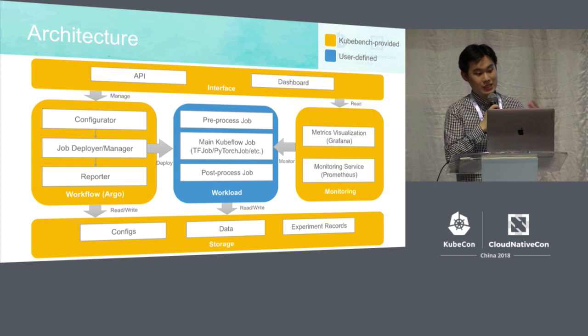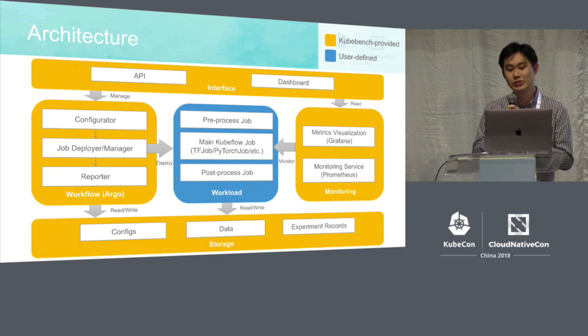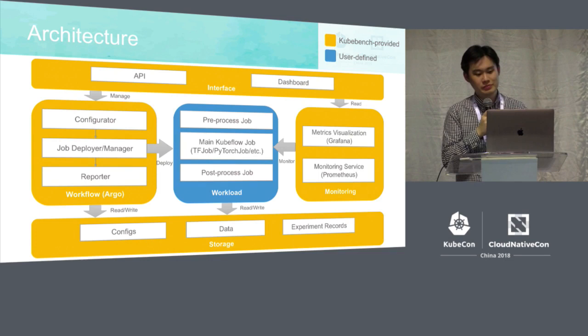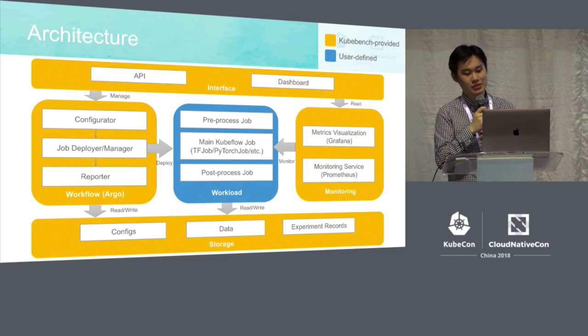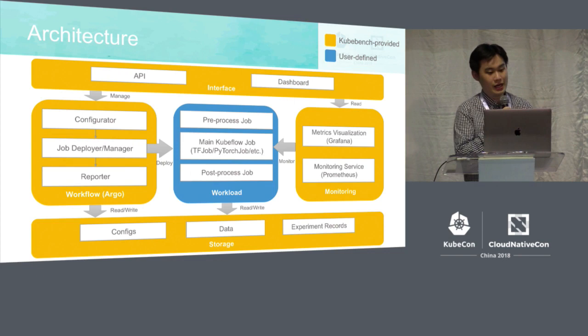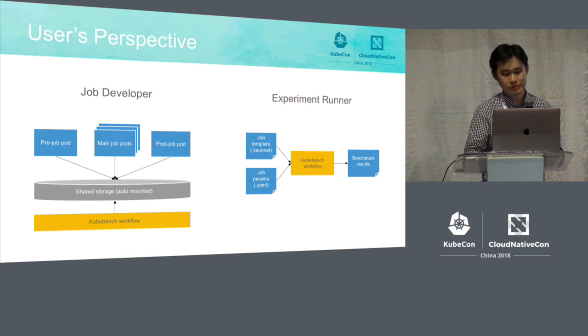We also provide a storage layer that offers shared storage. For example, if you have some benchmark configs and data, we need storage to hold all those benchmark records. The storage layer provides shared storage that can easily be used to share information between the user-defined workload and the Kubebench workflow. On the right side, we have a monitoring part — we use Prometheus to collect all the metrics from the benchmark jobs and Grafana to visualize the metrics. Finally, we have an interface dashboard and some APIs that help you interact with Kubebench more easily.